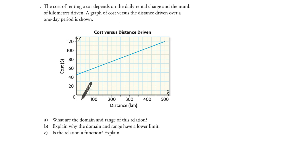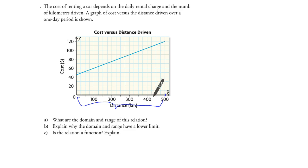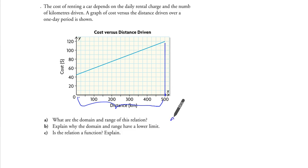What is the domain? The domain is 0 to — it stops right here — so this is 1, 2, 3, 4 to get to 500. That's actually exactly 500. The domain is distance starting from 0 and ending at 500.